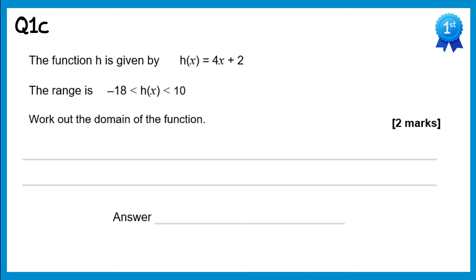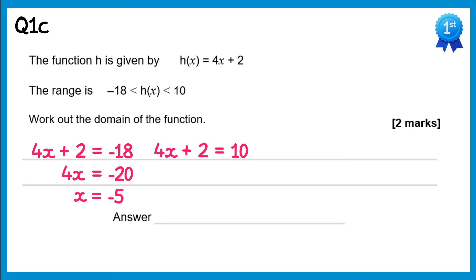For this question we write the function 4x plus 2 equal to each endpoint of the range. So 4x plus 2 equals negative 18, and 4x plus 2 equals 10. Solving the left one: 4x equals negative 20, so x equals negative 5. For the other one: 4x equals 8, so x equals 2. The domain is x between negative 5 and 2.